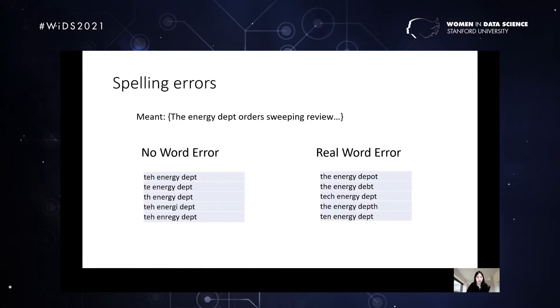Let's talk about spelling errors. There are all kinds of spelling errors. Broadly speaking, there are two categories. So take a look at the sentence, the energy department orders sweeping review. We can find some errors is called no word error. So what that means is that the word introduced here, the error, is not really a valid word in this language. So you can see T-H-E, the, sometimes this is one of the frequent errors. It's spelled as T-E-H, sometimes T-E, sometimes T-H, and so on. Energy here, you can see that it's introduced as E-N-E-R-G-I, instead of Y. Obviously, this is not part of the language. So we generally call that no word error.